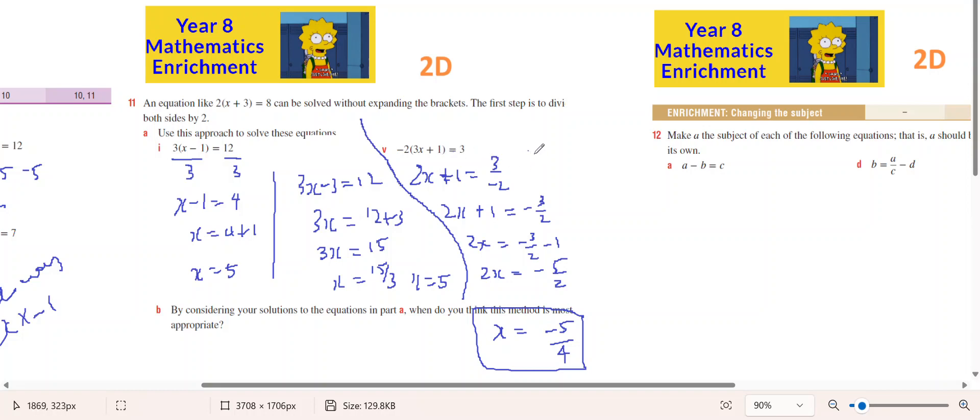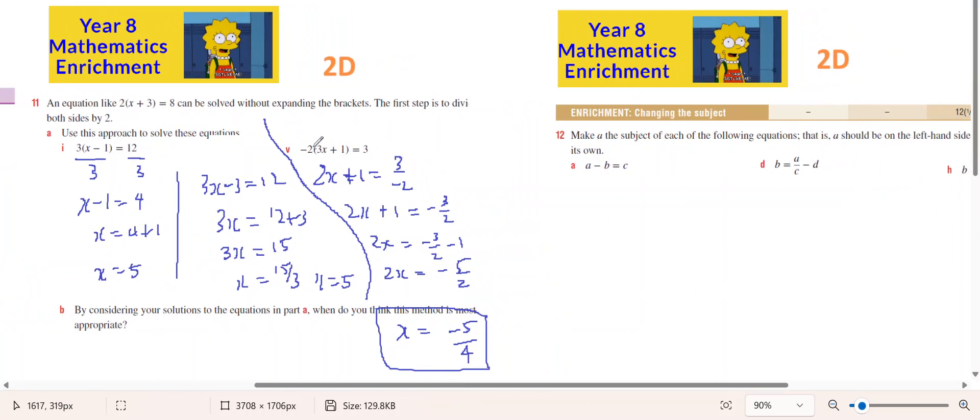And the second option is that you multiply the brackets out. So negative 2 times 3 is negative 6x. Negative 2 times 1 is negative 2 equals 3.